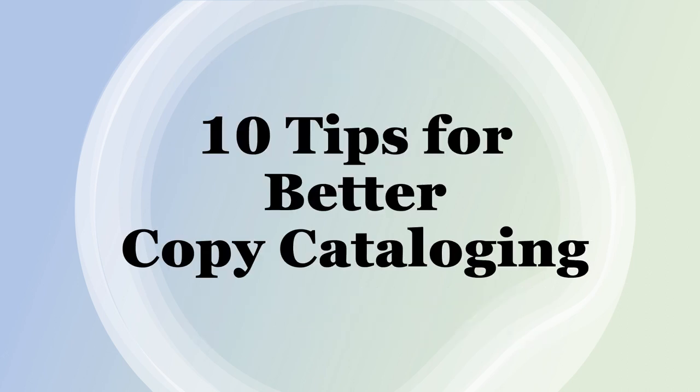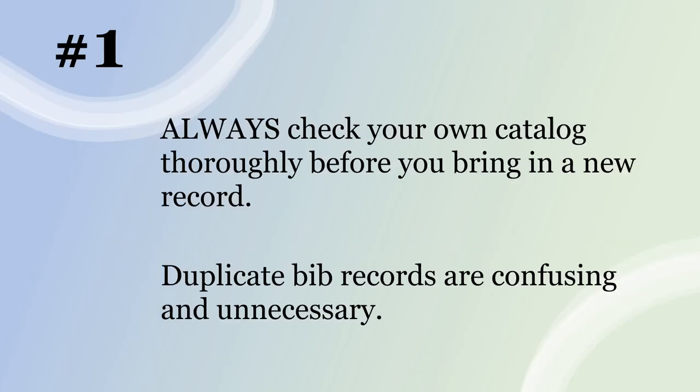Let's go through 10 tips for better copy cataloging in your library. First, always check your own catalog thoroughly before you bring in a new record. Duplicate records are confusing and unnecessary. Never go to an outside source before you make sure there's not already a record in your own local catalog — whether that's just for your library or for your consortium, depending on where you are.